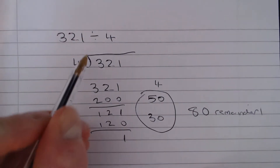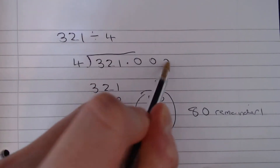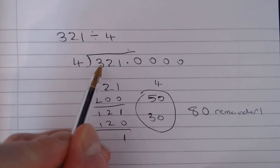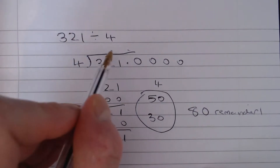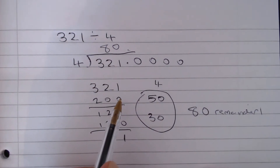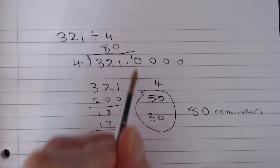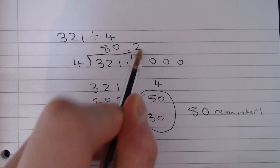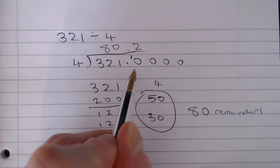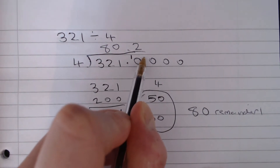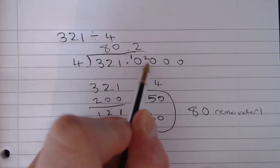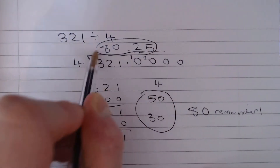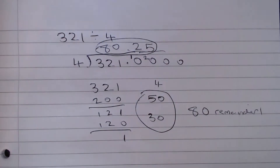So in here we add in our decimal points. How many 4s go into 321? Well, I now know that 80 do, remainder 1. So we put the 1 here. How many 4s go into 10? Well, 2 — that's 8 — and then we remainder 2. So how many 4s go into 20? 5 go exactly, so the answer is 80.25.